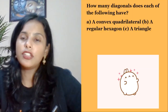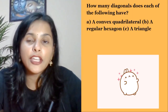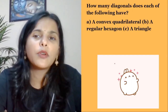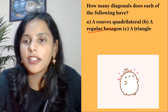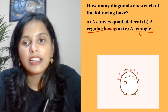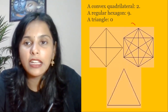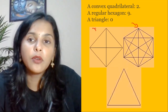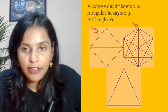Next question: how many diagonals does each of the following have? Convex quadrilateral, regular hexagon, and a triangle. Triangle is zero, hexagon has nine diagonals, and quadrilateral has two.